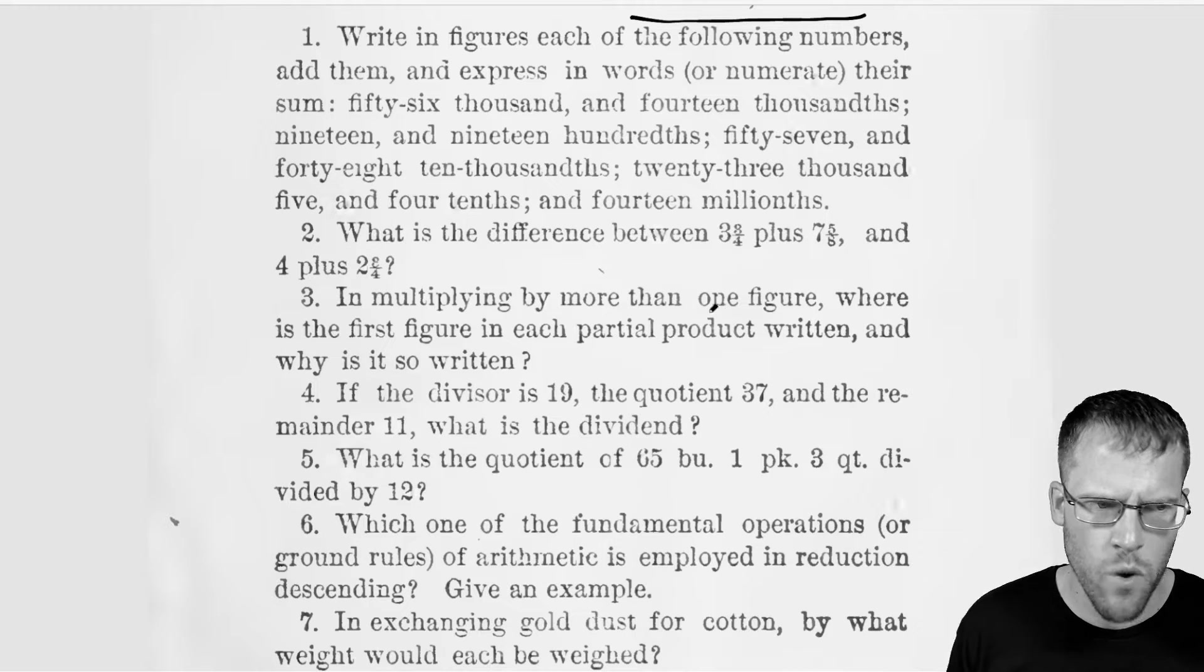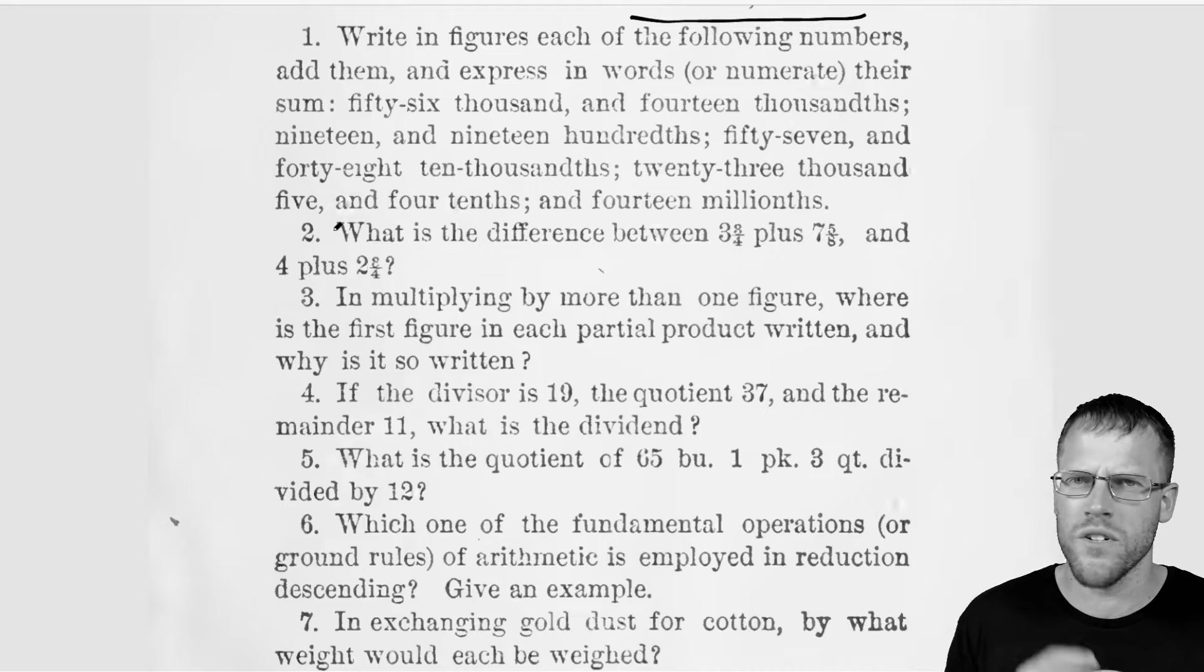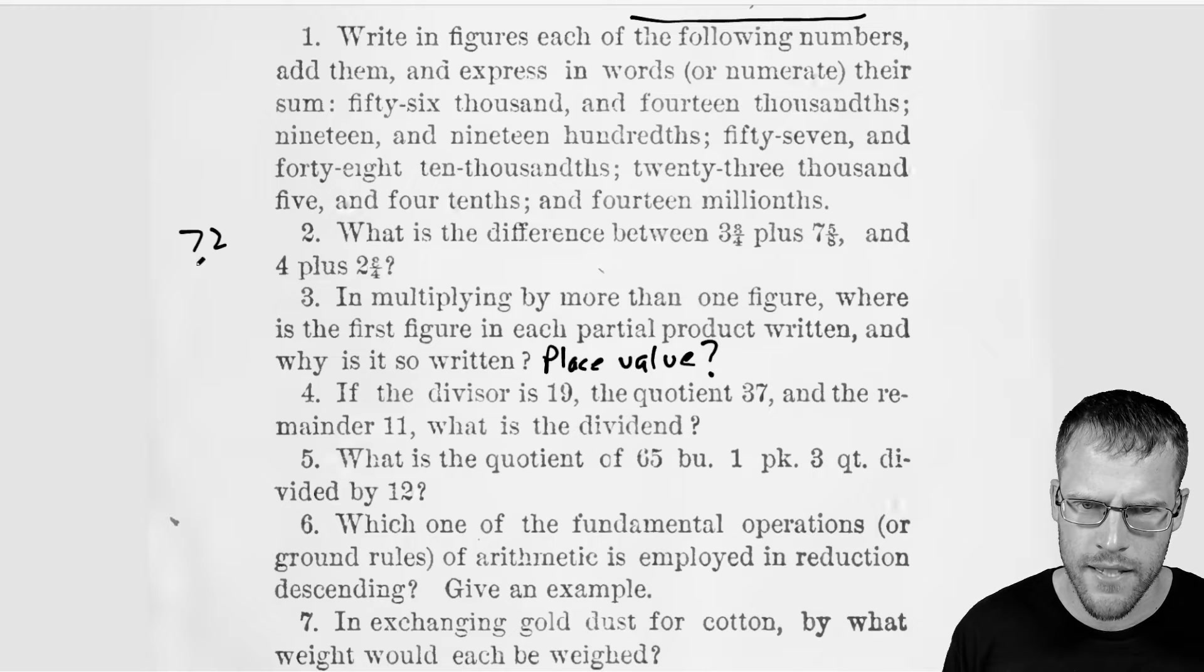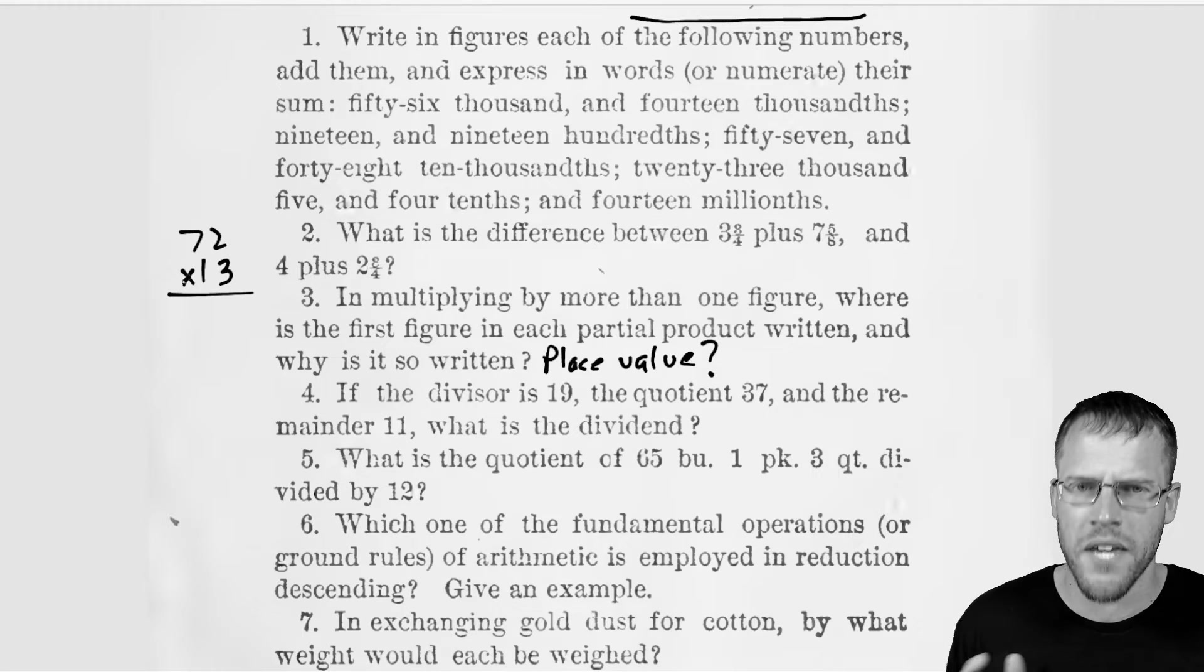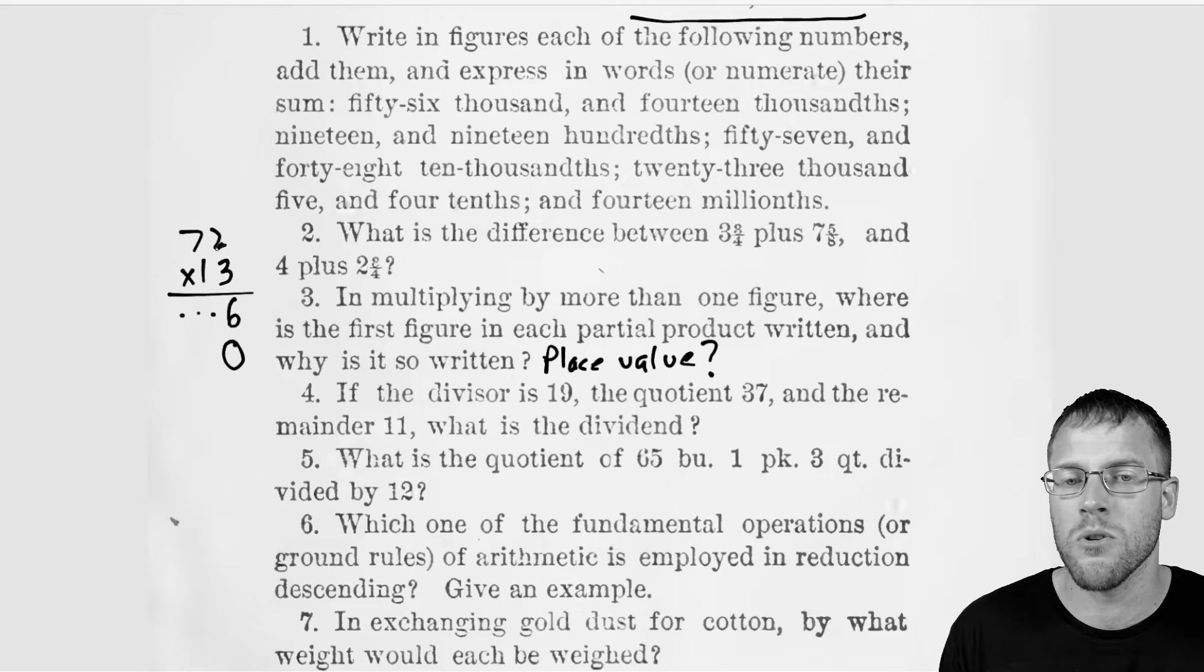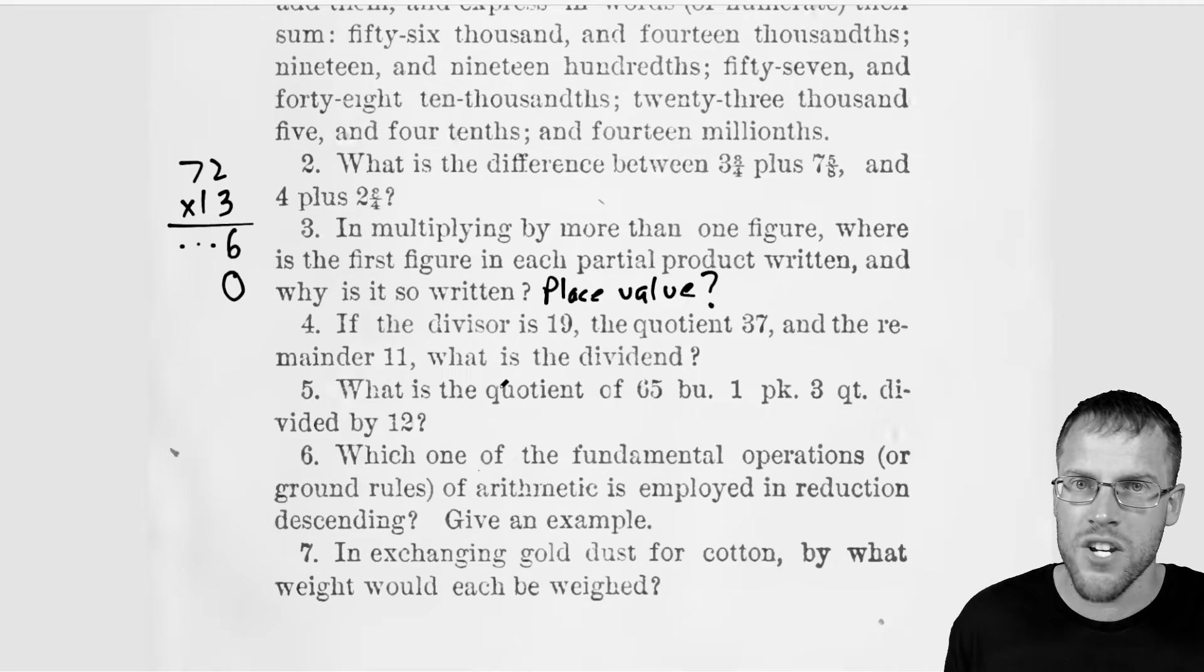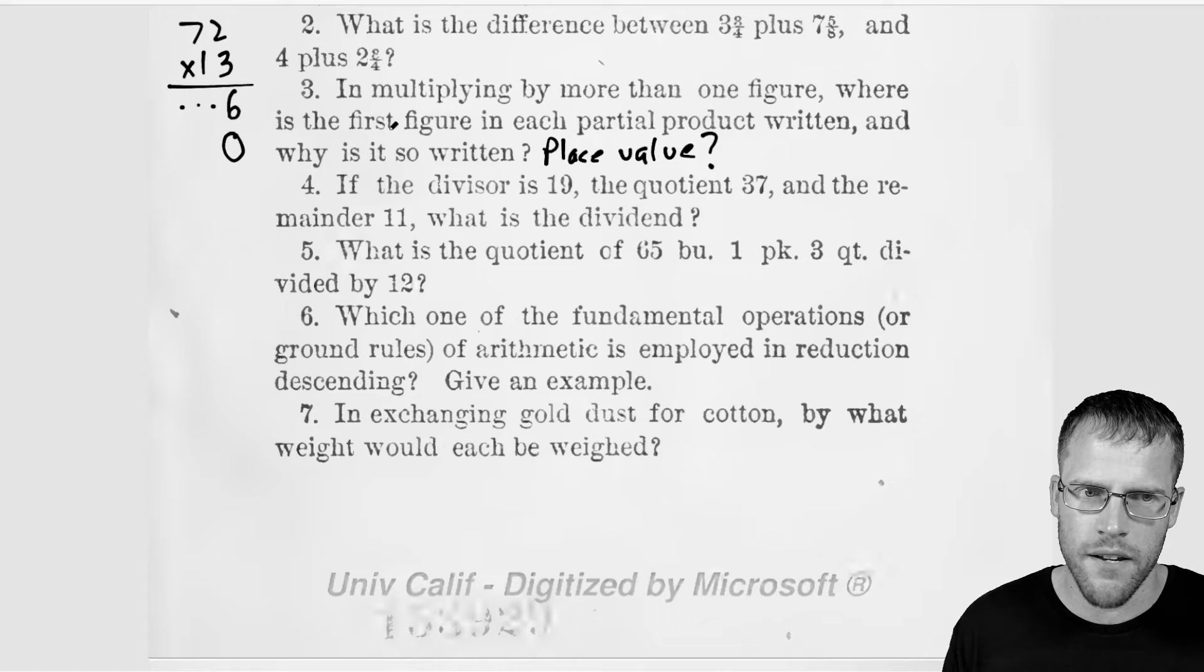Now three, in multiplying by more than one figure, where is the first figure in each partial product written and why is it so written? So this one, the wording right away, I'm just looking at that and it's throwing me off. I would want to reread this, but it's making me think of place value. And so place value maybe. And let's say I did something like 72 times 13. I know that when we're doing the partial product, this is kind of explaining the process behind long multiplication that when you multiply the ones place together and you start working this out that by the time you get to the next row, you've got to put a placeholder here because now you're multiplying from the tens place. So the partial products is making me think of the distributive property.